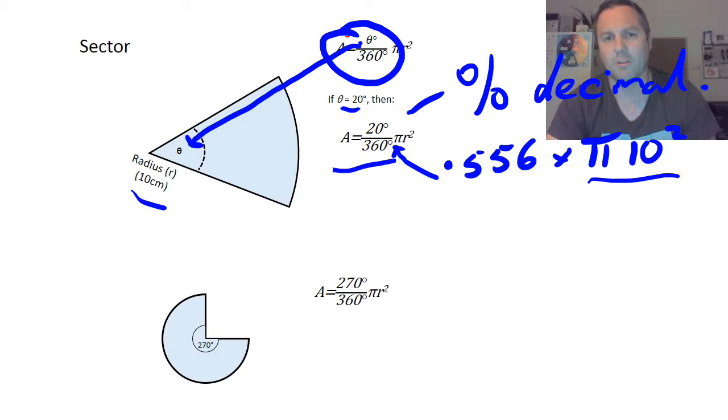314.16. Okay, so we put all that into the calculator like we showed you before, and it ends up being 17.45 centimeters squared. Okay, so we get our decimal by doing the division here, times it by pi r squared, and you get your answer.